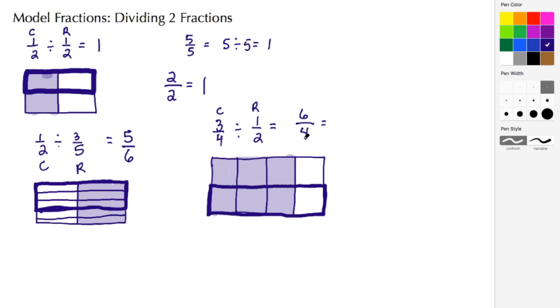So we can, well first let's simplify. These are even numbers so we can divide by two. Six divided by two is three, four divided by two is two. We have an improper fraction and two goes into three one whole time leaving a remainder of one, and we keep our divisor of two. So three fourths divided by one half actually comes out to be one and a half.